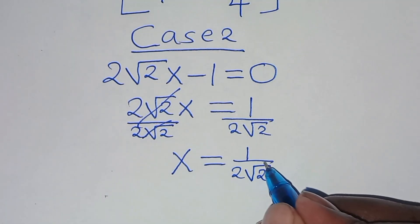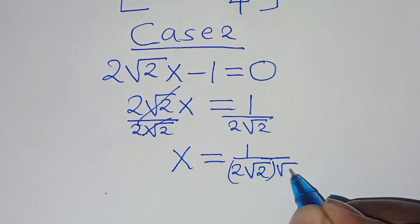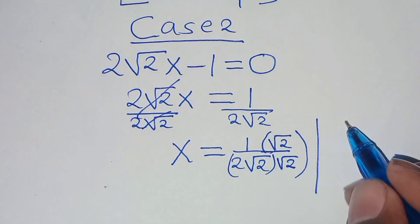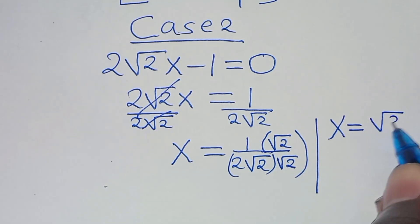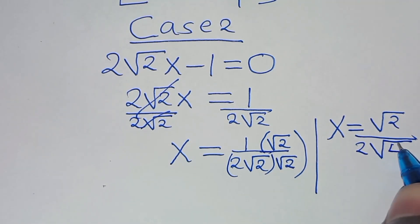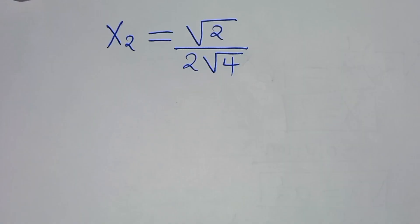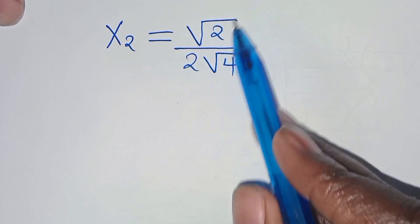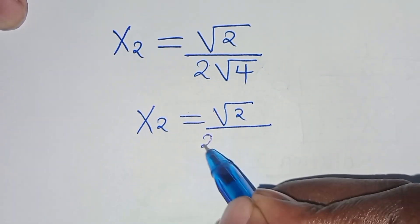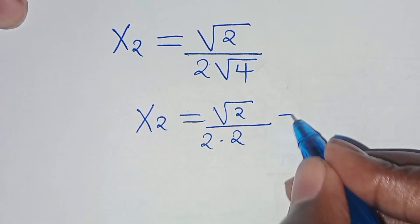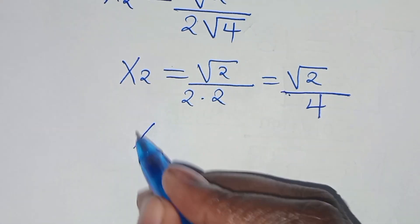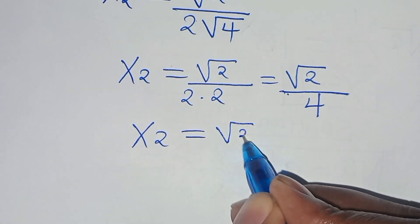To rationalize the denominator, we multiply numerator and denominator by √2. So x equals √2 divided by 2 times √2 times √2, which is √4. We have x₂ equals √2 over 2 times √4, and since √4 equals 2, this gives 2 times 2 equals 4. Therefore x₂ equals √2 over 4.